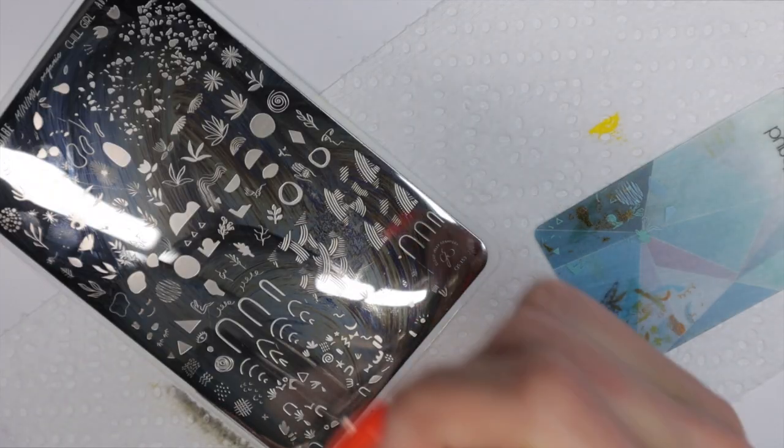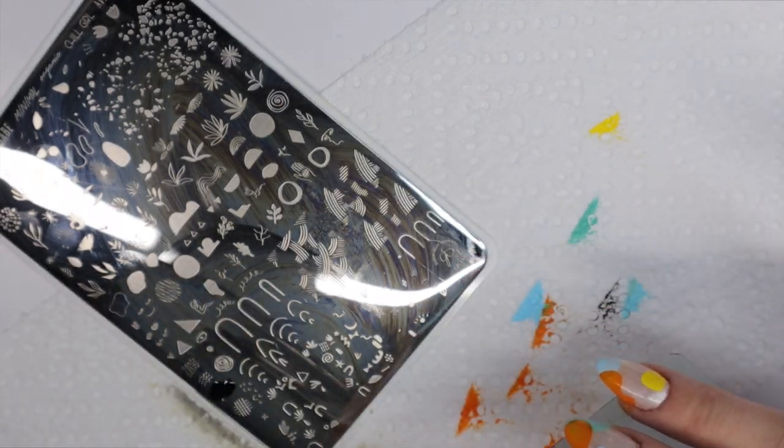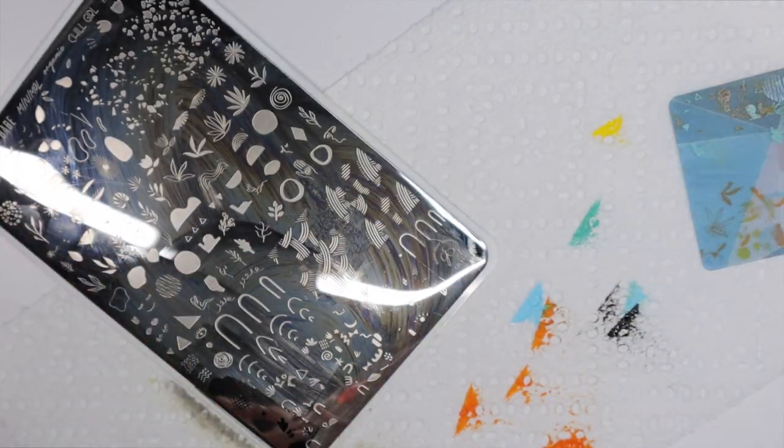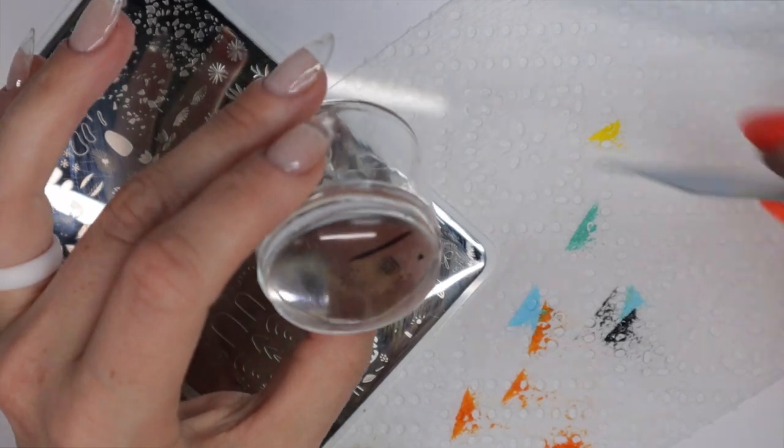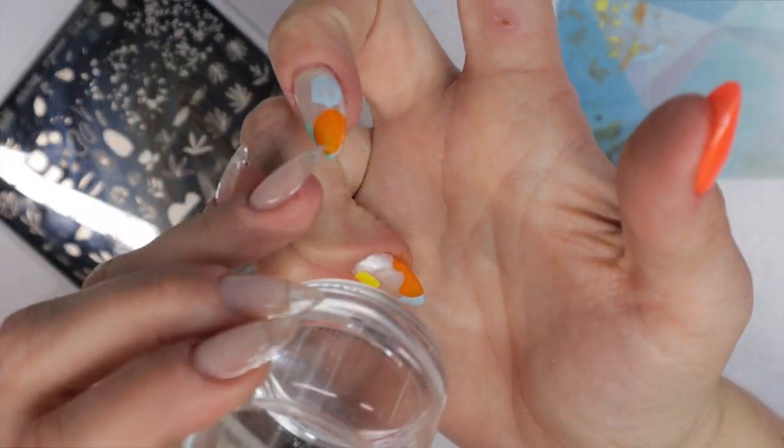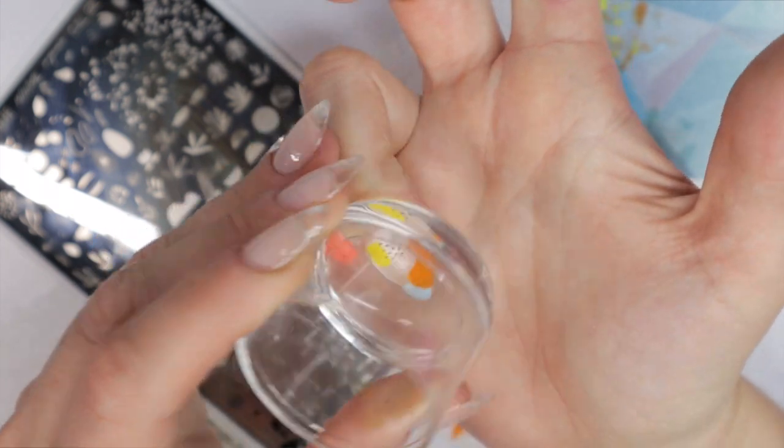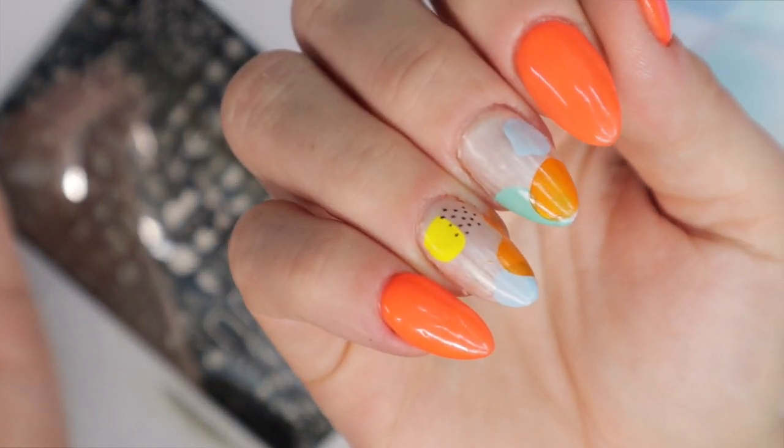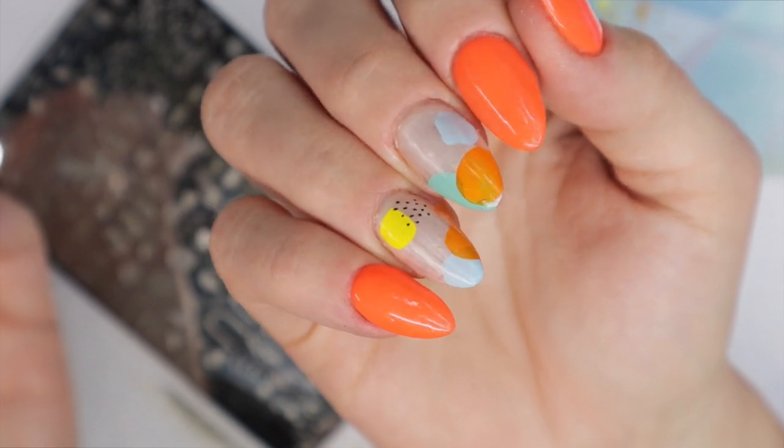Now that all of the colored part is done I get to go in with the black stamping polish and do the details that Katie Dutra did in black. So here are some little dots that have no rhyme or reason and they're similar to what she has on her client's nails. So I'm going to stamp those on both of my fingers and then we're going to get into the leaf designs.